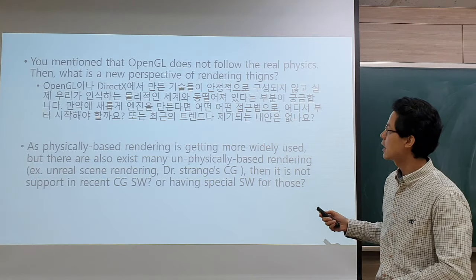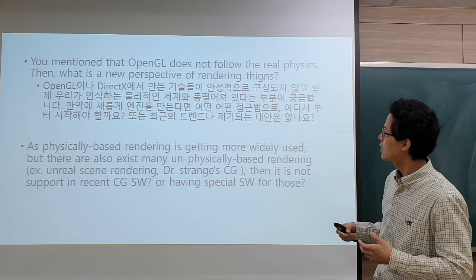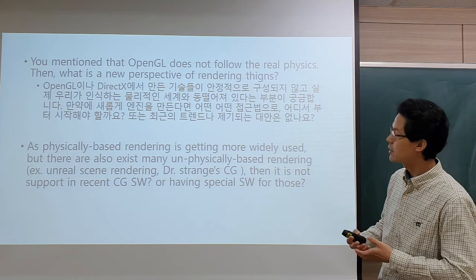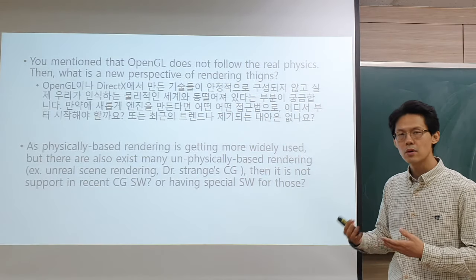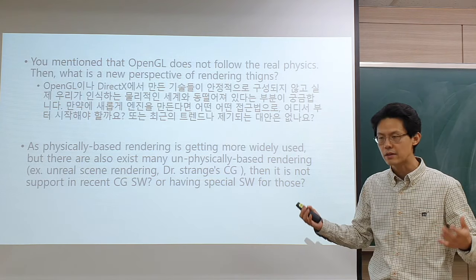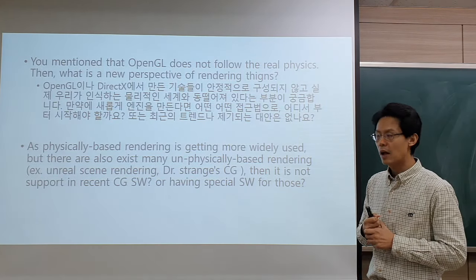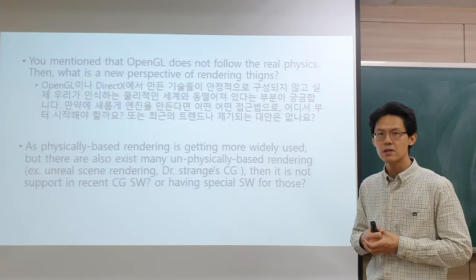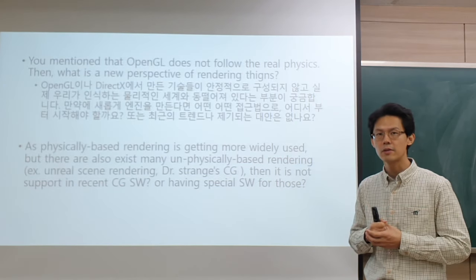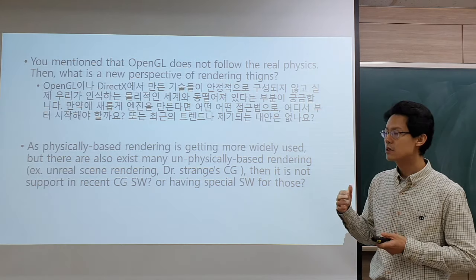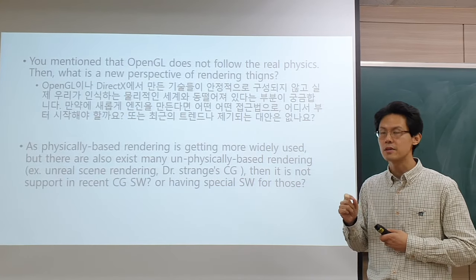One of your fellow students mentioned that I said OpenGL does not follow real physics, and asked what the novel perspectives are for rendering these things — what are the recent trends? We will talk about OpenGL and DirectX, the APIs underlying these techniques. One of the main applications of graphics is games, and one of the main requirements for games is real-time performance. Because of that, early rendering techniques aimed for very fast performance instead of very high quality.